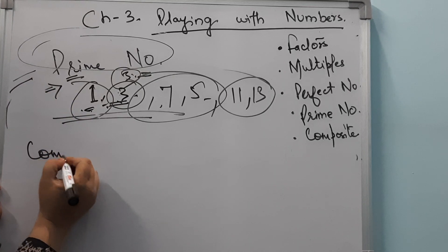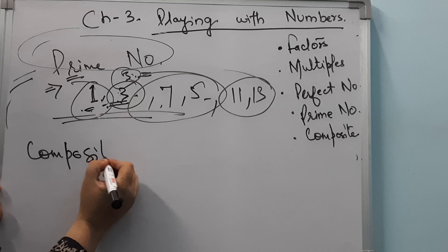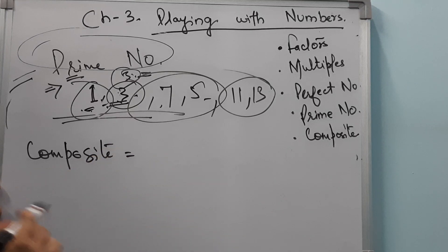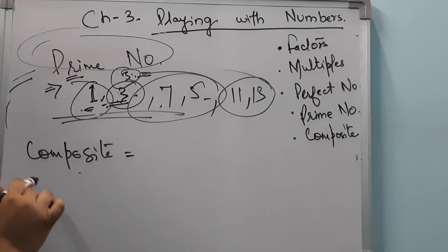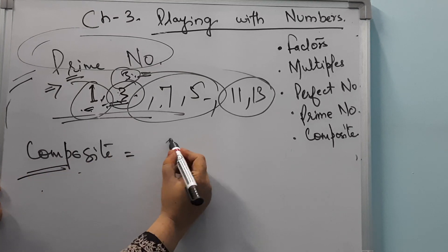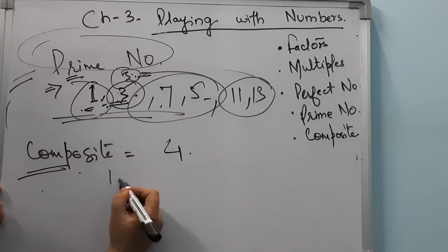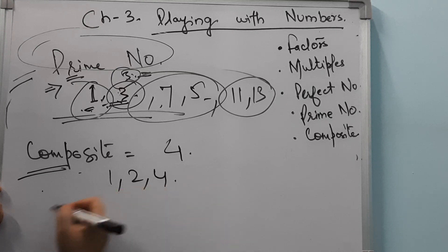Now we will discuss composite numbers. All numbers other than prime numbers are composite numbers. Numbers that appear in multiplication tables (jo kisi ki table mein aata hai) are composite numbers. For example, 4 has factors 1, 2, and 4, so it's a composite number.